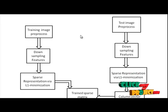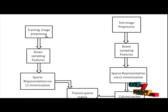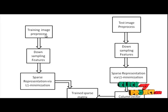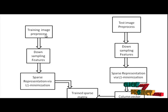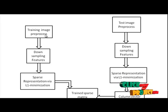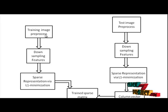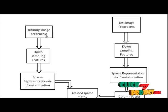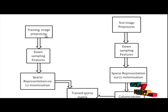Now let us have a view on the data flow diagram. First, we load our training images, which contain various persons' face images with various expressions and illuminations. We also preprocess the whole training images. In the preprocessing step, if any noise occurs in our training images, it is removed. Noise is nothing but undesired information that contaminates an image. These noises are removed using some types of filters.